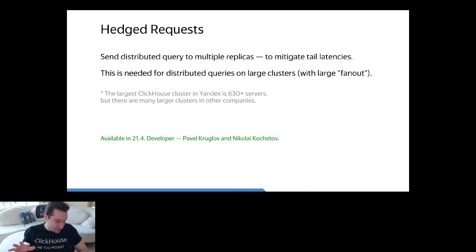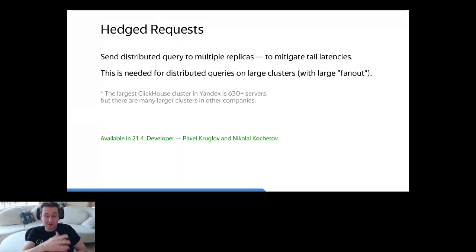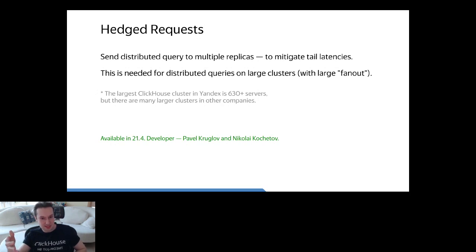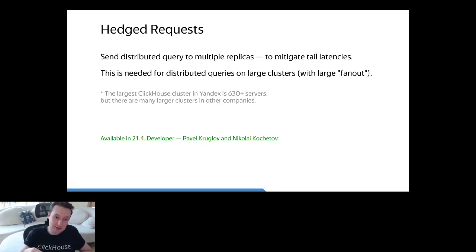Hedged requests: when you do a distributed query to multiple shards and each shard has multiple replicas, some replicas can be down and ClickHouse will automatically fail over to another replica — that was always working. But what if some replicas are just slower than other replicas? In that case, we have implemented hedged requests: ClickHouse will calculate a timeout and speculatively connect to another replica that can be faster.